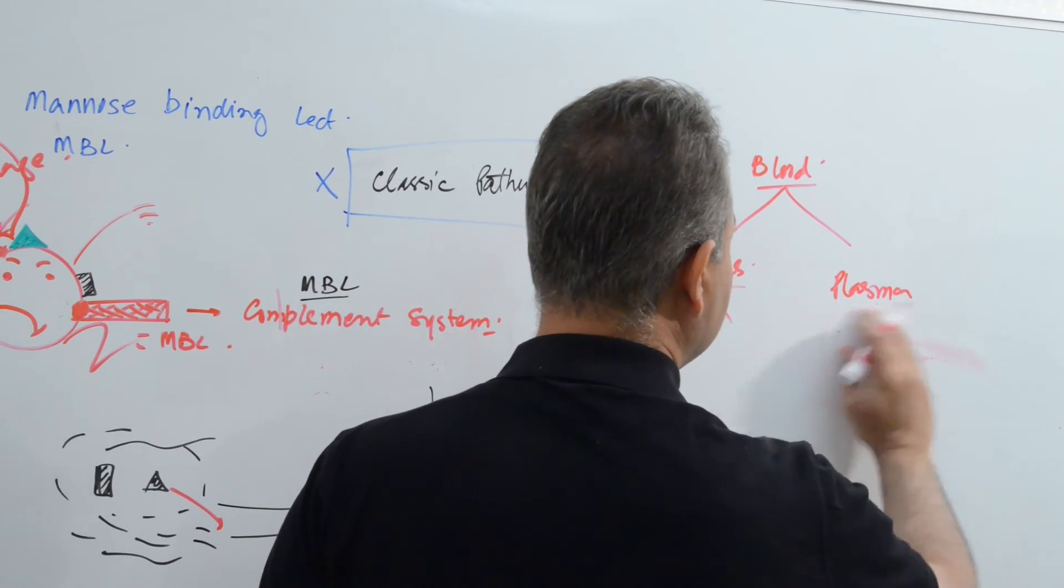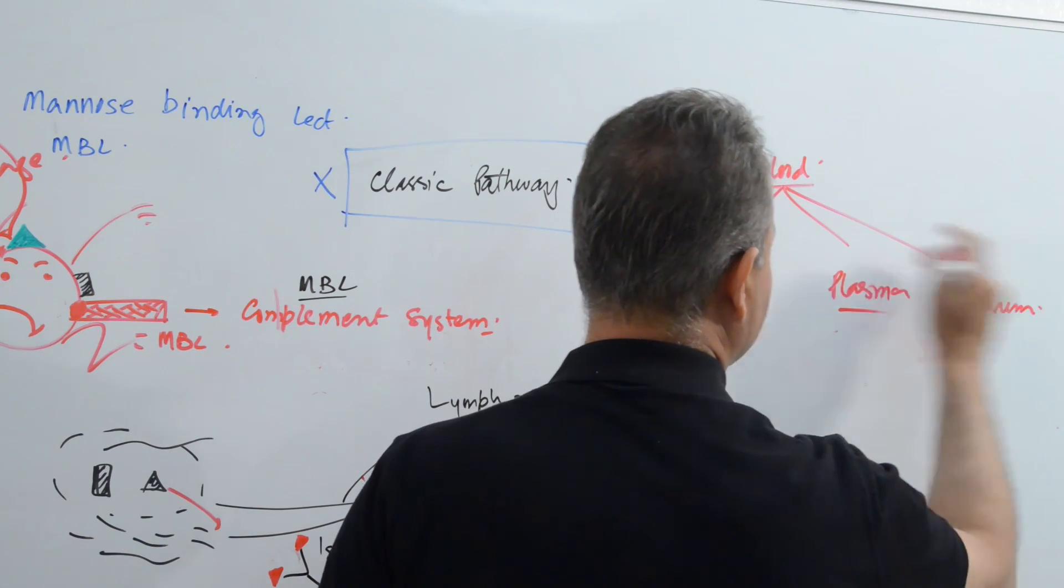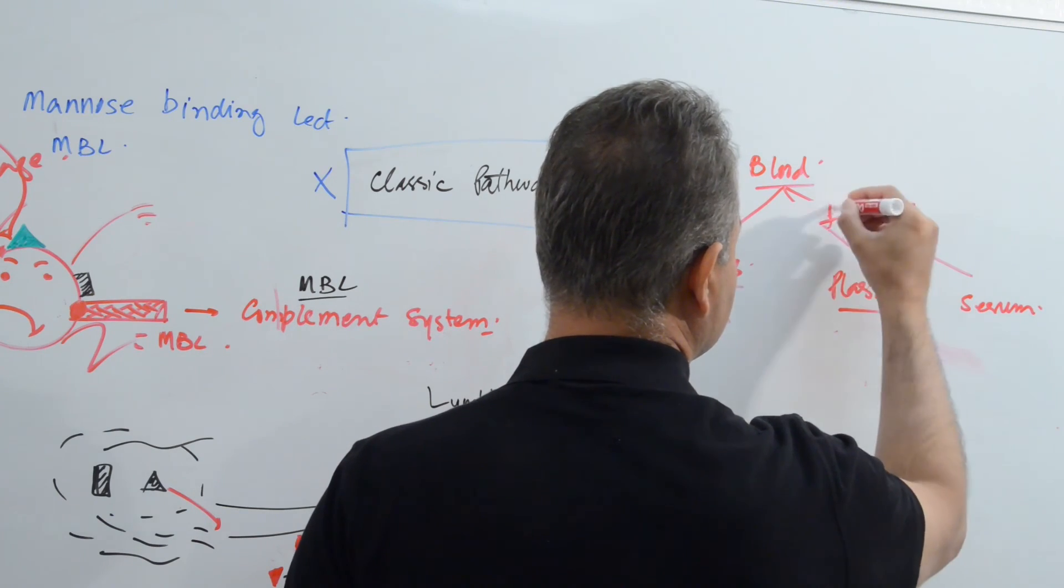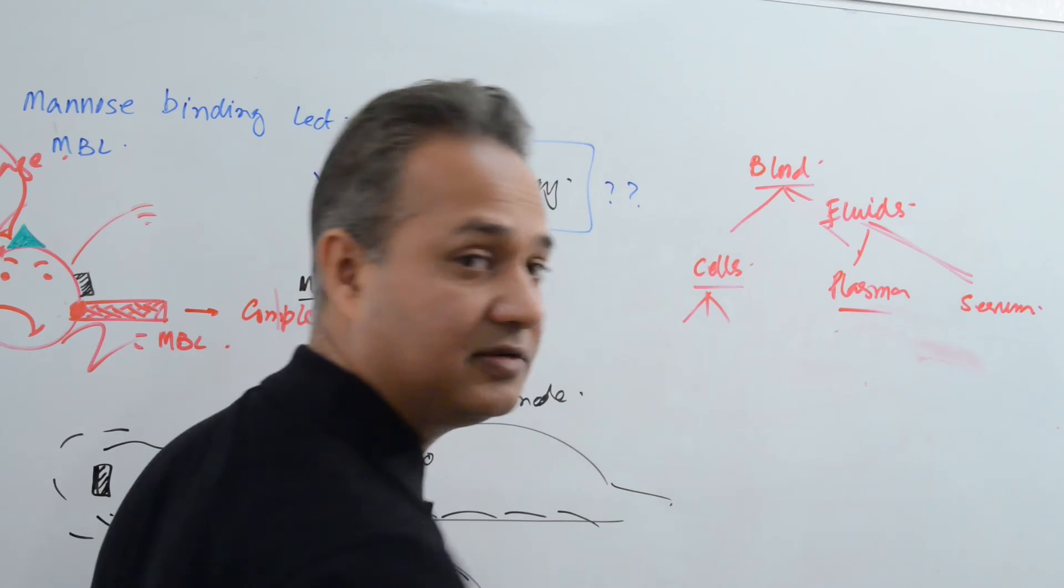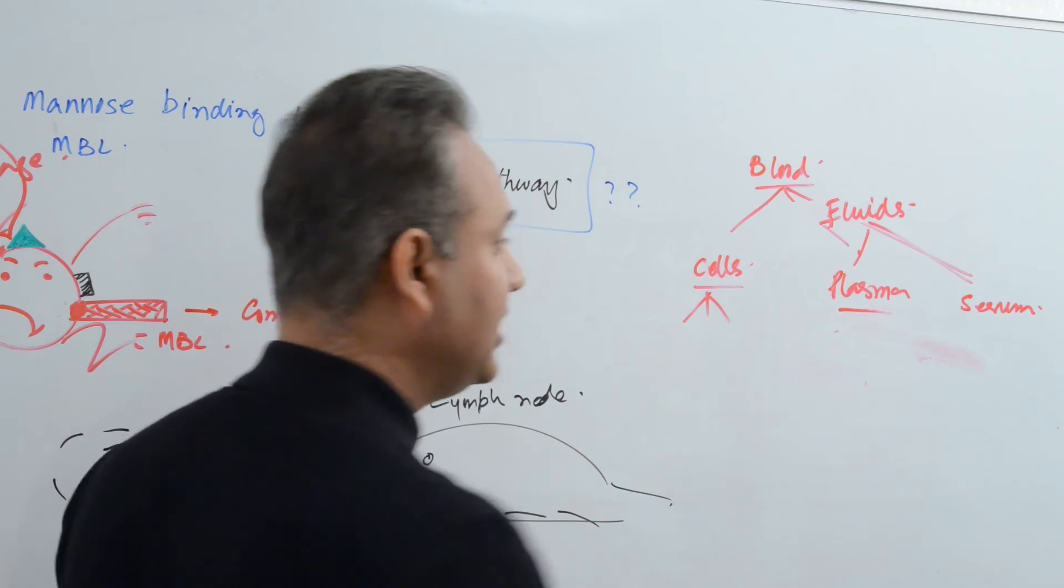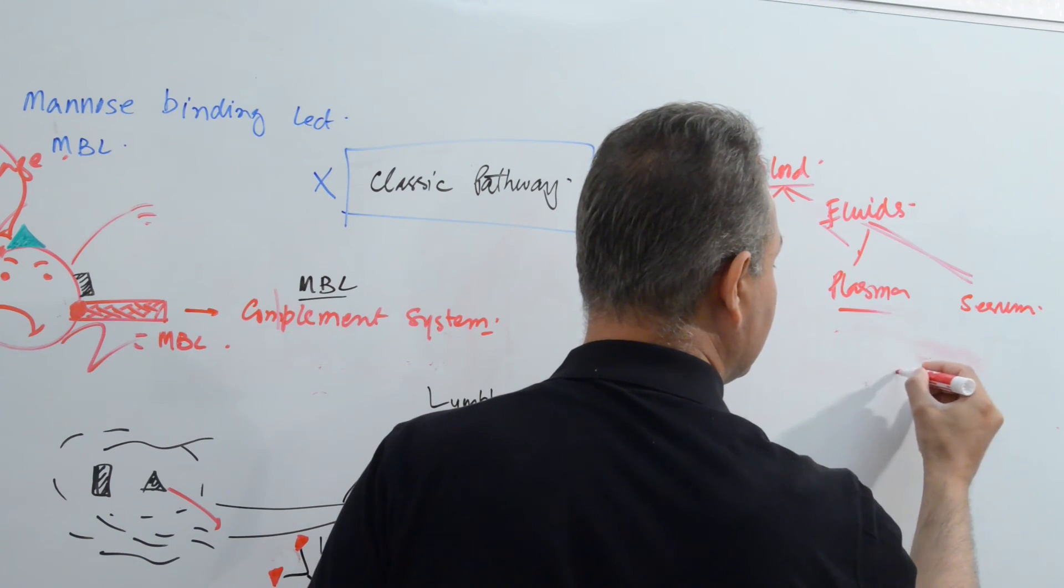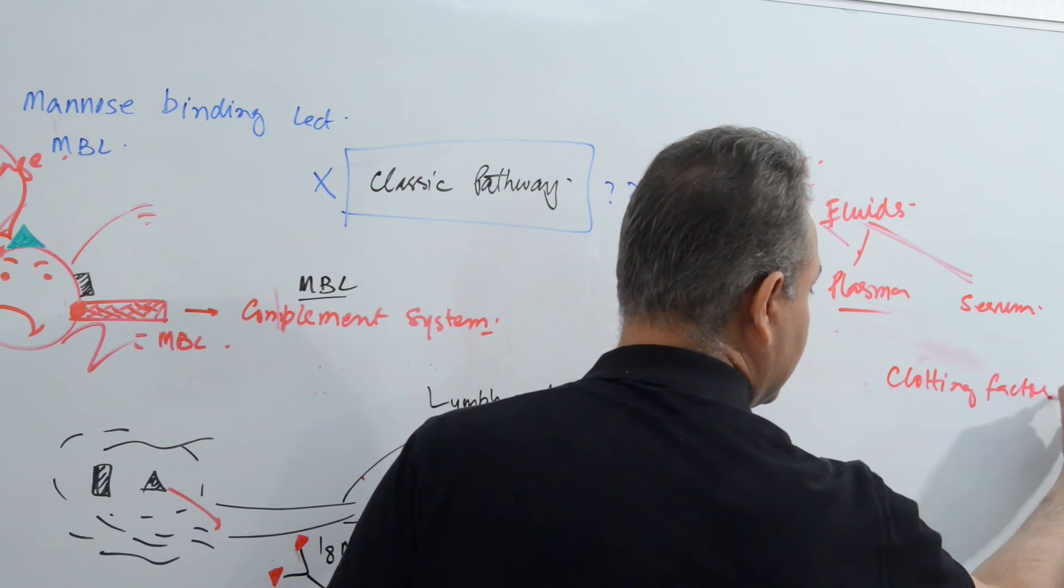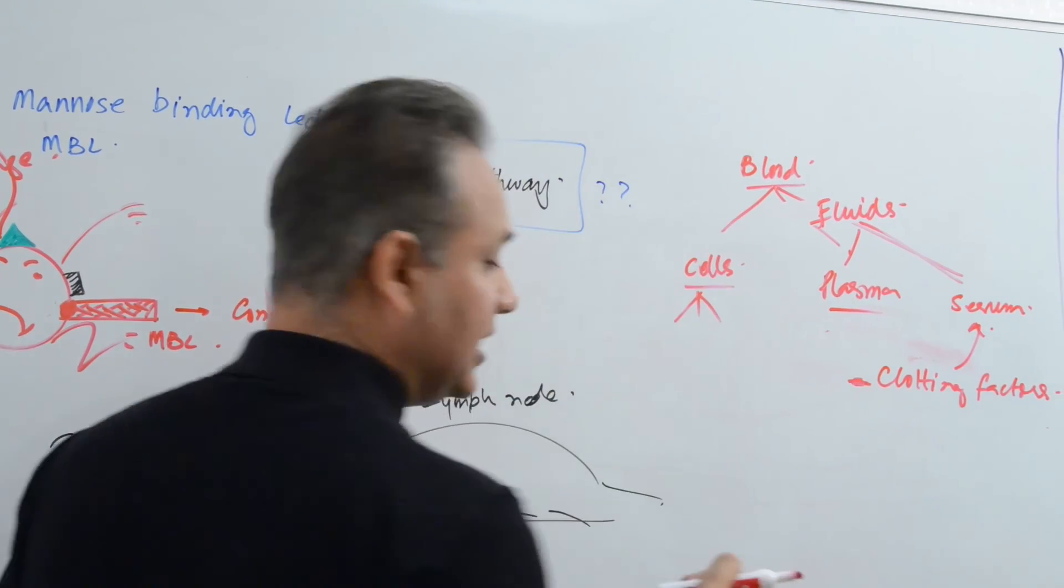So instead of doing this, let me just say blood, fluids, plasma and serum. So cells and fluids, cells and fluid. Fluid is divided into plasma and serum. And really, the serum is the plasma negative, subtracting the clotting factors. If you take them out, then that becomes serum.